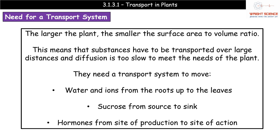The first topic is the need for a transport system in plants. This comes back to the basic idea of surface area to volume ratio. A larger plant has a smaller surface area to volume ratio, meaning substances must travel over large distances to reach all cells. Think about the distance from a tree's roots to its top leaves — diffusion alone would be too slow to meet the plant's needs, so a specialist transport system is required.